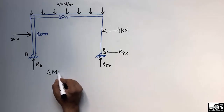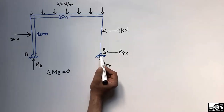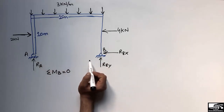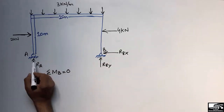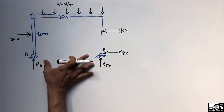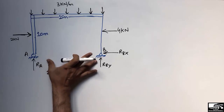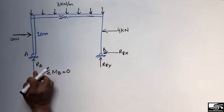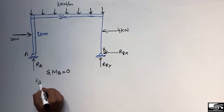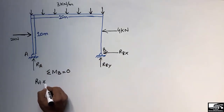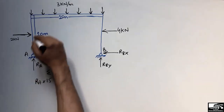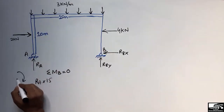Taking the summation of moments at point B equal to zero, I can find R_A. The moment arm for R_A is 15 meters, which is the distance from A to B. So R_A multiplied by 15 meters gives the moment for that force, and this force acts in a clockwise direction, which we take as negative.